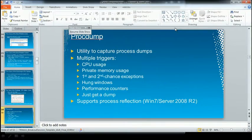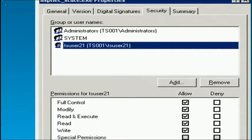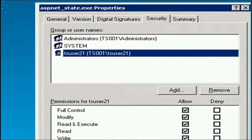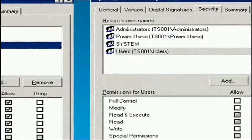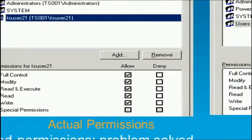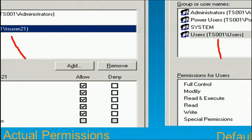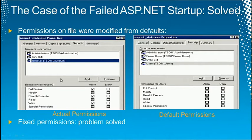He had a strong clue. He looked at the permissions on the ASP.NET exe file and compared them to another working web server. The difference: the working server had the right user account listed, whereas the broken one had 'TS User' instead. Something got screwed up. He changed the permissions to match the correct configuration, and the problem was solved.